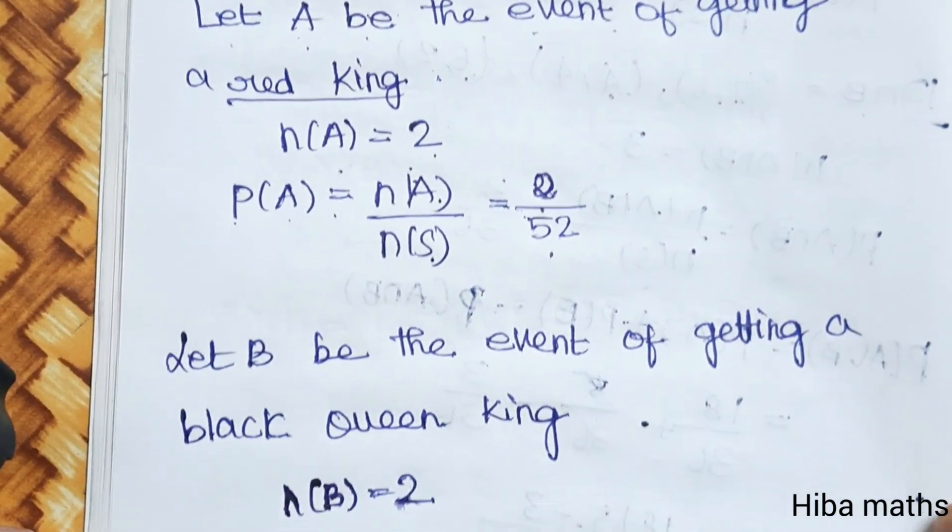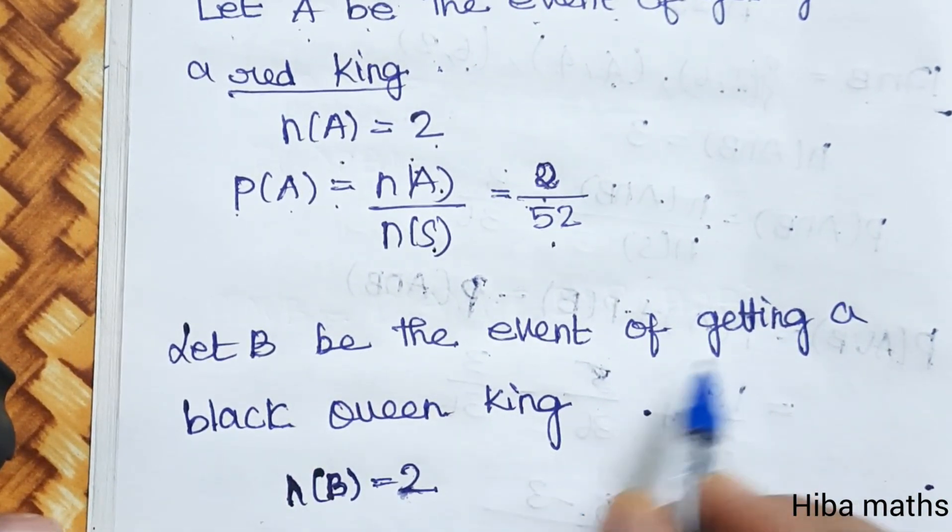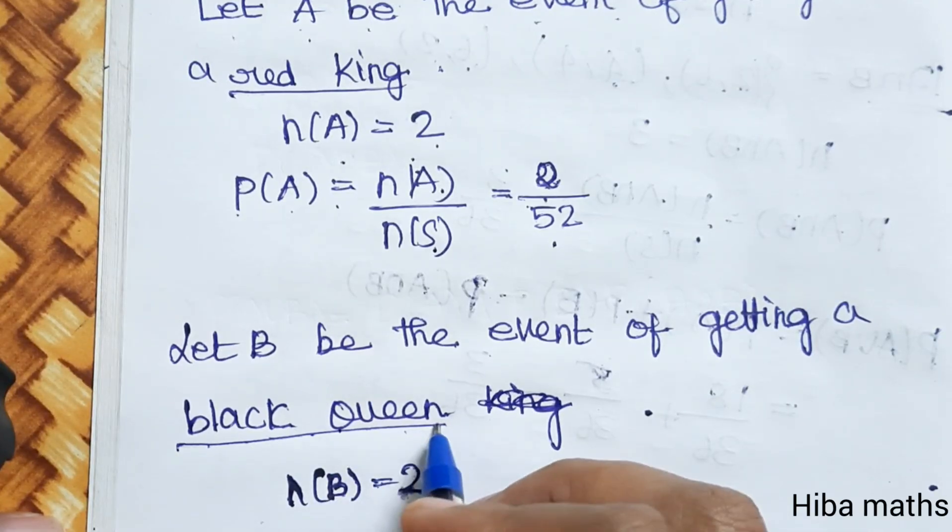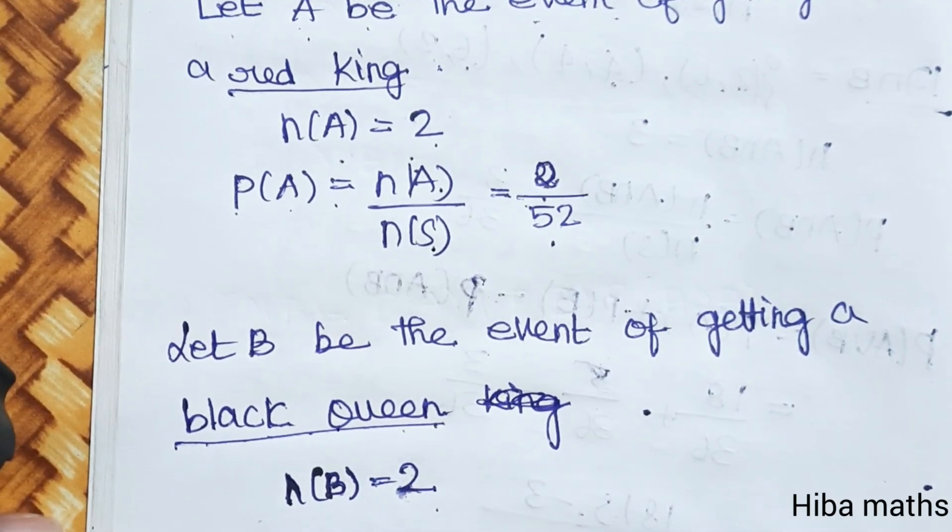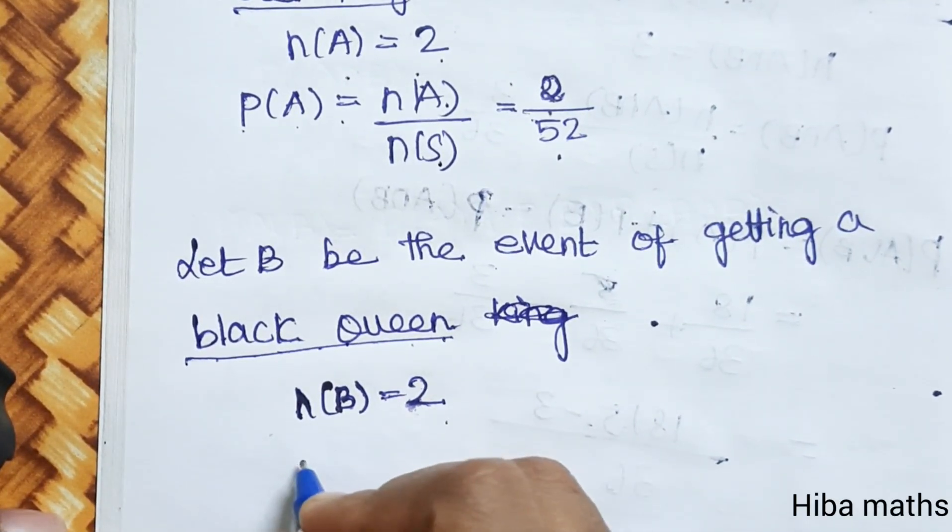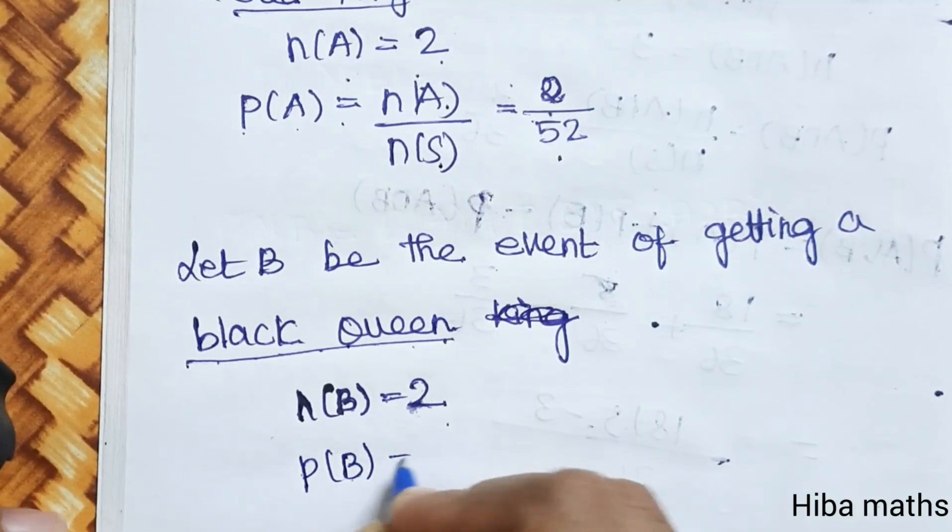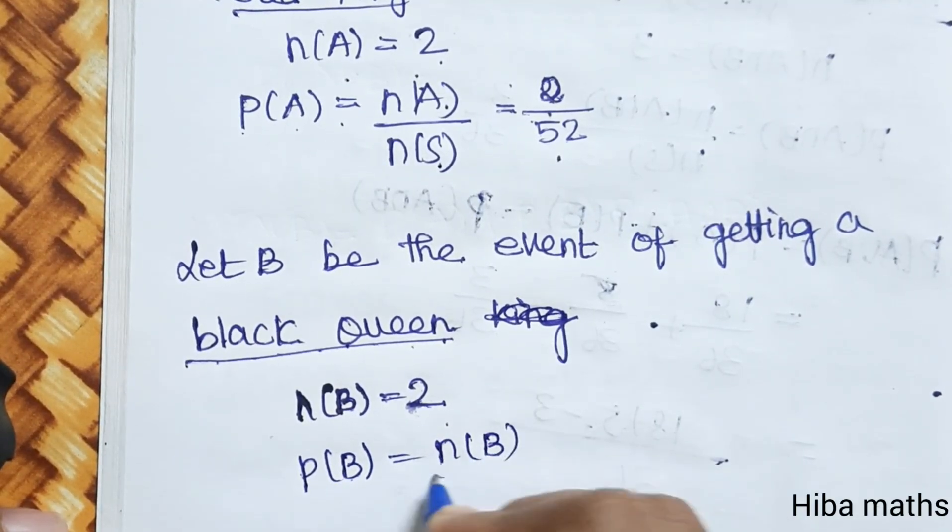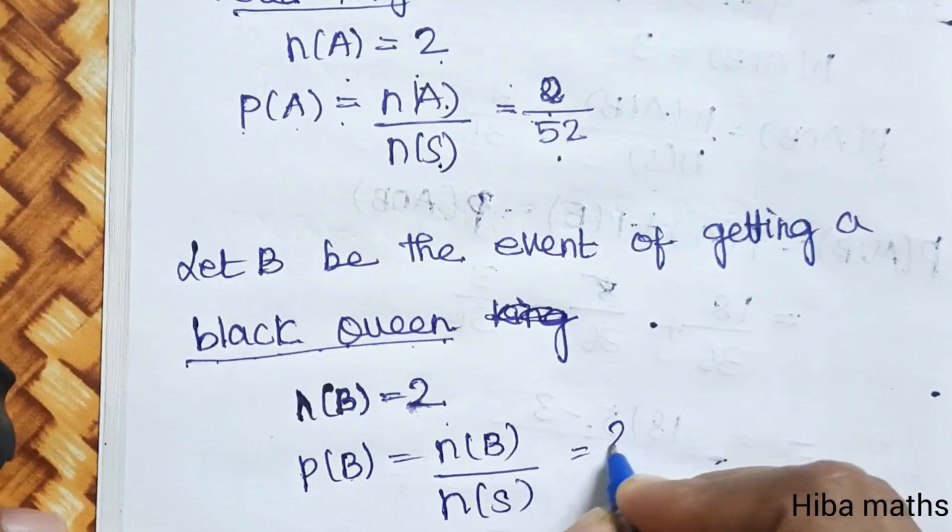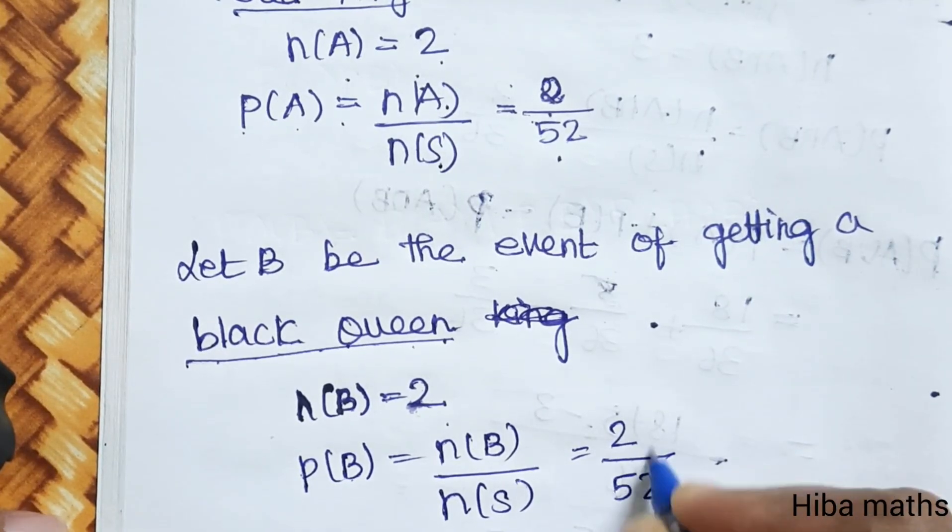So let B be the event of getting a black queen. Black queen is 2. So black color queen is 2. So P(B) is N(B) by N(S), that is 2 by 52.